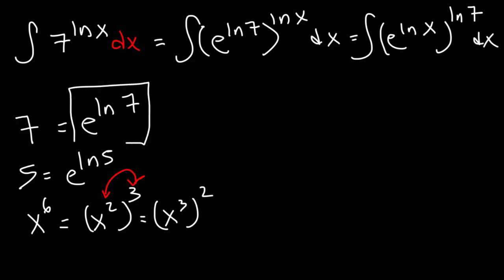Now notice that e to the ln 7 is equal to 7. So therefore, e to the ln x must be equal to, this will have to be equal to x.